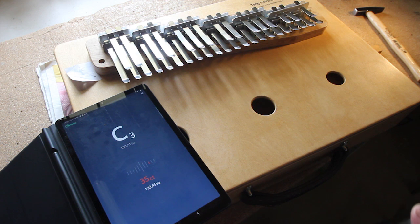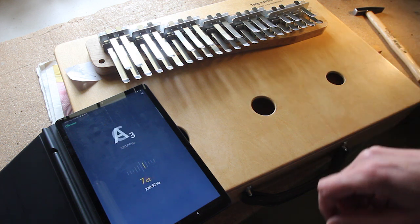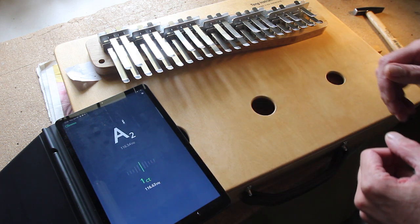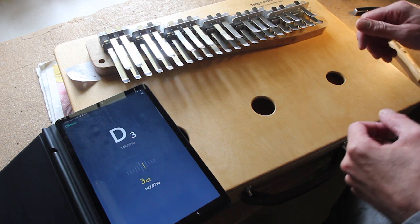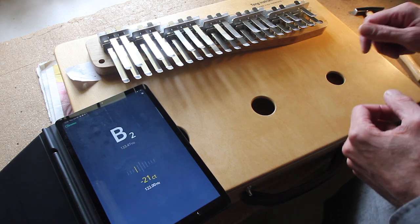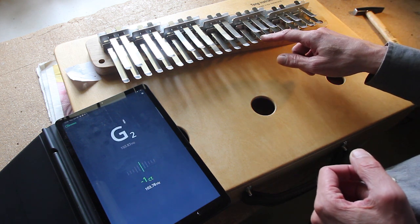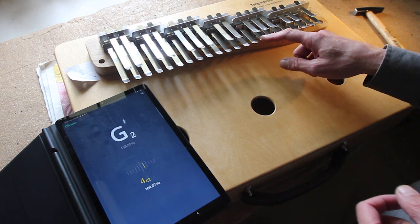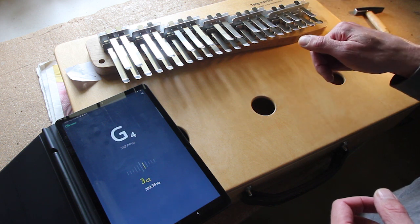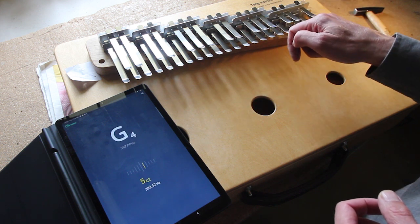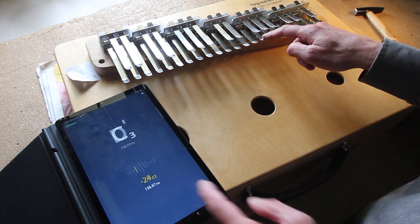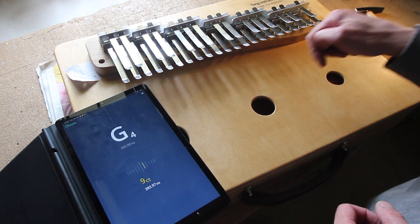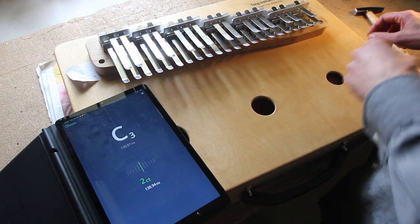I also use an app for tuning. This one is called Chroma but there are several ones available. And that kind of helps especially for the fine tuning. So it will indicate whether you're high or low in your tuning. So this one is a little high it says.